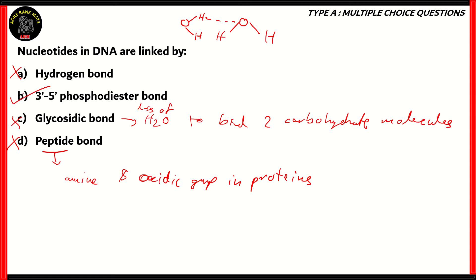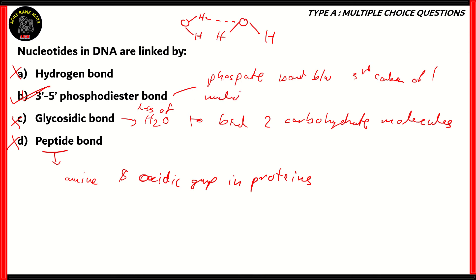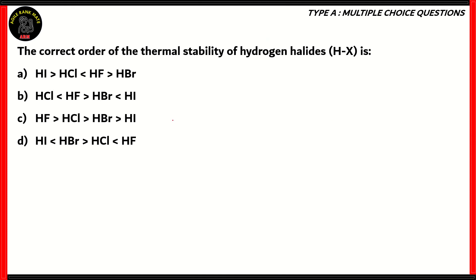The only correct option is option B, the 3' to 5' phosphodiester bond. Basically, you have a phosphate bond between the third carbon of one nucleotide and the fifth carbon of another nucleotide. So option B is the correct option. Now let's look at another question.